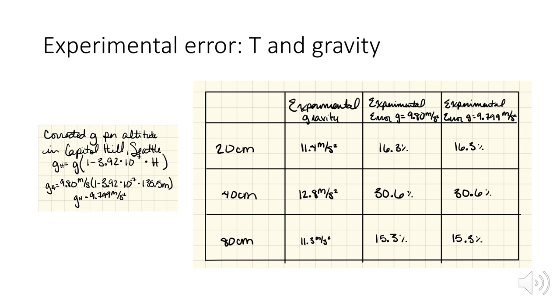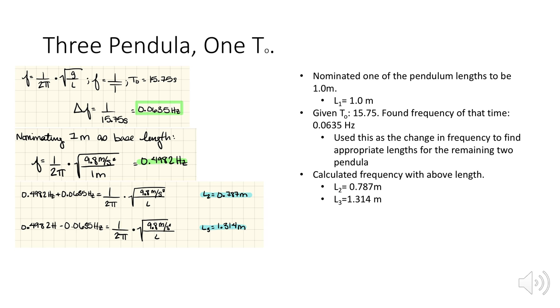That's called out more specifically here. We looked at what the experimental error was based on what the book value of gravity was, as well as what the specific gravity of where we conducted the experiment was. In both cases, those were so close, it really made very little difference. 9.799 is the value we used for Capitol Hill in Seattle, and that's where we conducted the experiment. The experimental gravity, again, is 11.3 to 12.8, 12.8 being a 30.6% offage.